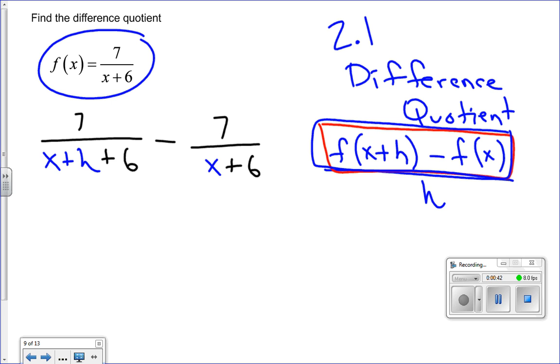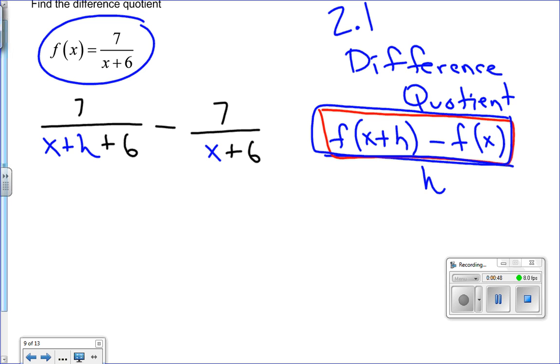What we have here is two fractions that we need to get common denominators for. Let's just do that by multiplying the second fraction by the first denominator x plus h plus 6 over x plus h plus 6.